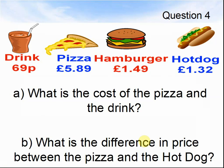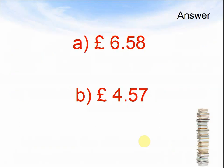Question 4. A drink is 69 pence. Pizza is £5.89. Hamburger, £1.49. Hot dog, £1.32. What is the cost of a pizza and the drink? What is the difference in price between the pizza and the hot dog? Pause the video until you are ready to see the answer. Here comes the answer.